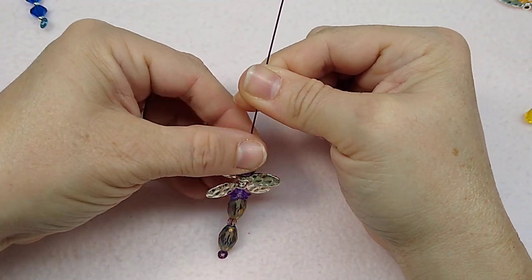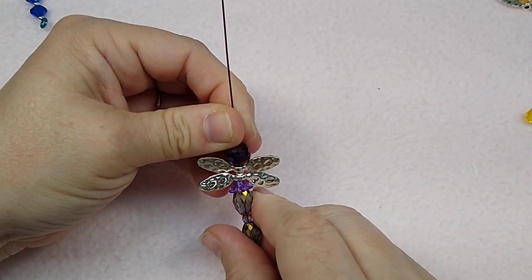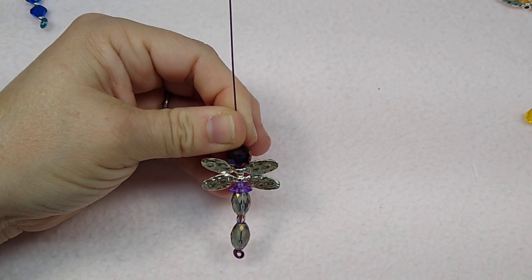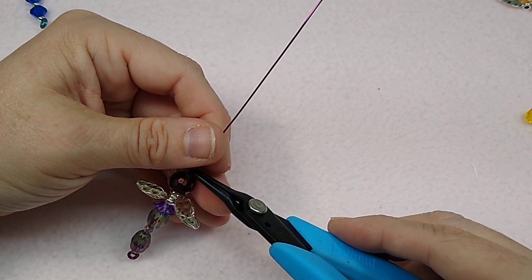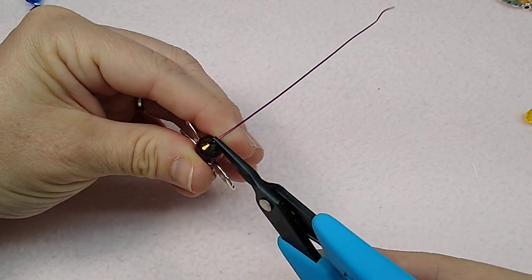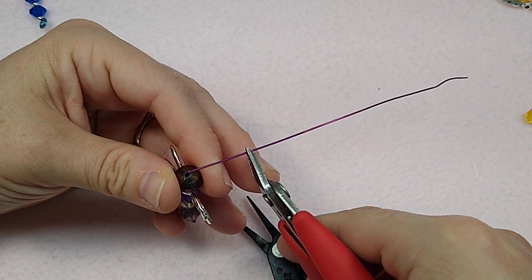Now with this artistic wire, it's fairly thin and I like to make a wrapped loop on these. So I'm going to bend this at a 90 degree angle. I go just above the bead, bend at a 90 degree angle. Cut it.